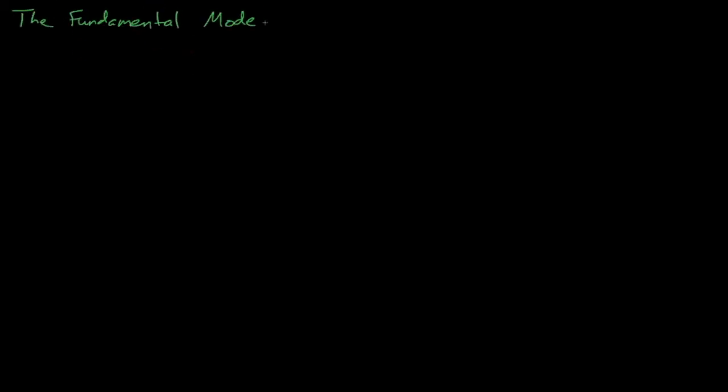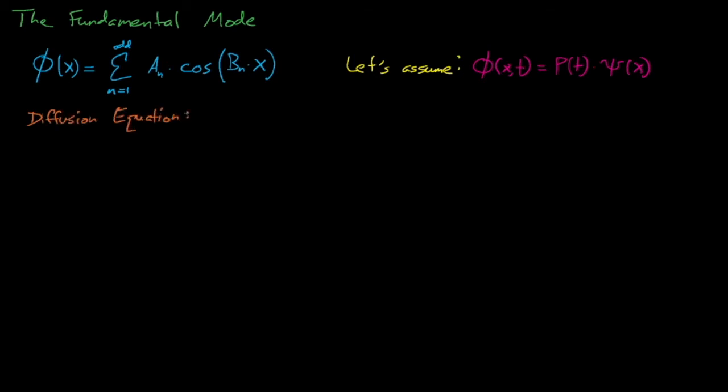Getting back to our flux solution, so far we've found that the neutron flux is given by this infinite sum of cosine functions. Thankfully, the final flux that we'll arrive at won't be an infinite series, so let's simplify things a little bit. First, we will temporarily rescind one of our prior assumptions and allow the diffusion equation and flux solution to be a function of space and time. From here, we'll assume that our flux is separable as a function of space and time, which means that the flux can be split into a time-dependent term, p of t, multiplied by a space-dependent shape function, psi of x, that have no relation to one another.